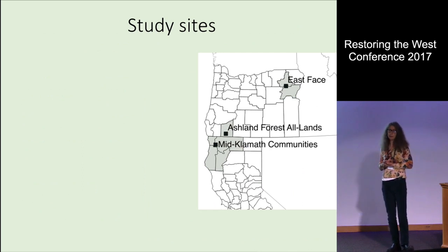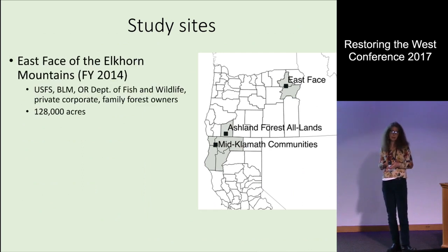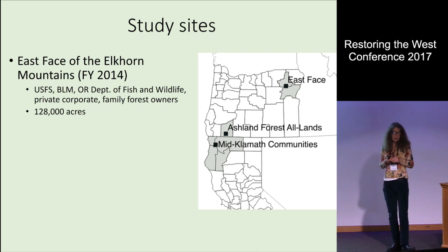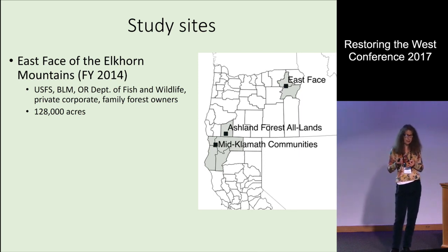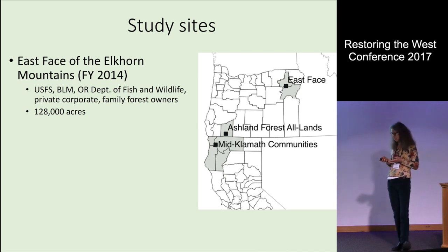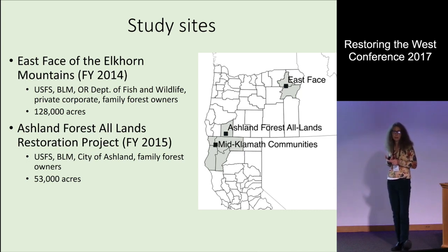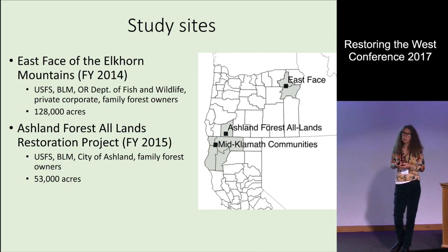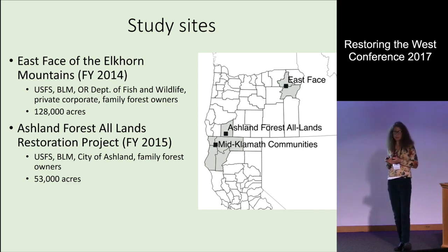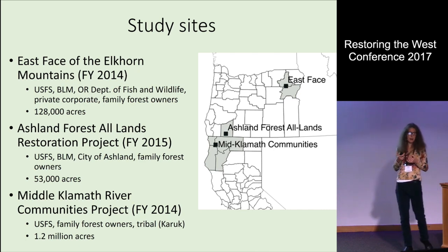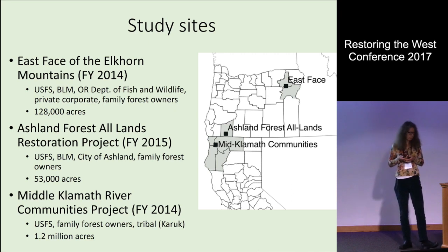The three study sites I'll discuss are: the East Face of the Elkhorn Mountains Project in Northeastern Oregon — 128,000 acres with Forest Service, Bureau of Land Management, Oregon Department of Fish and Wildlife, private corporate, and family forest lands. The Ashland Forest All Lands Restoration Project, funded in 2015, which is 53,000 acres with Forest Service, Bureau of Land Management, City of Ashland, and family forest lands. And the Middle Klamath River Communities Project, with Forest Service, family forest lands, and Karuk Tribal Lands, spanning about 1.2 million acres.